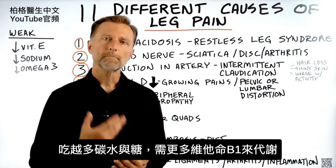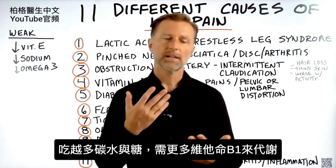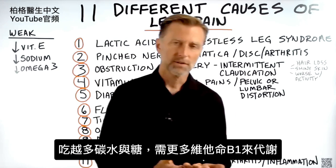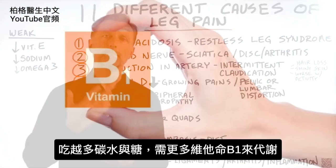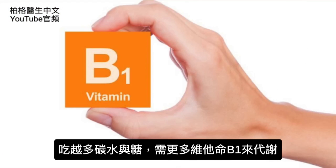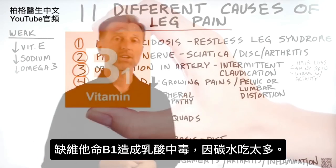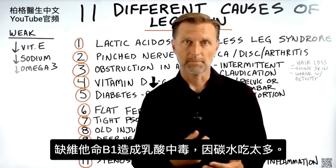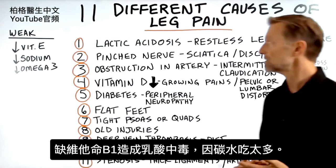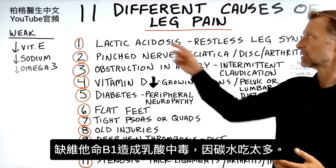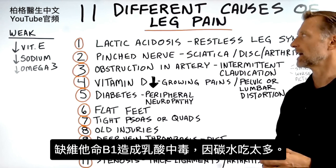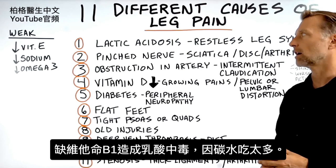The more carbohydrate and sugar that you eat, the more B1 that you need to metabolize it. That's the underlying cause — a B1 deficiency caused by a diet too high in carbohydrate.